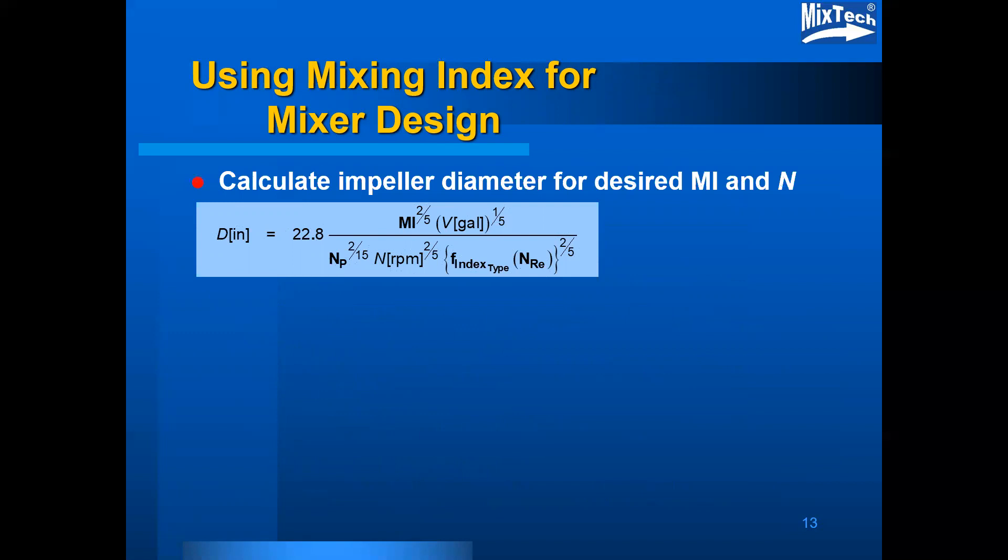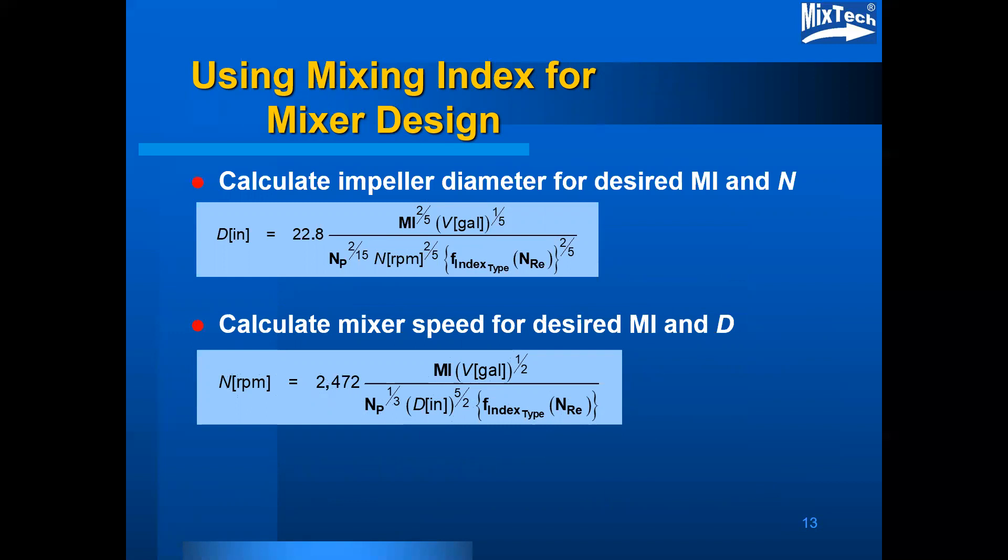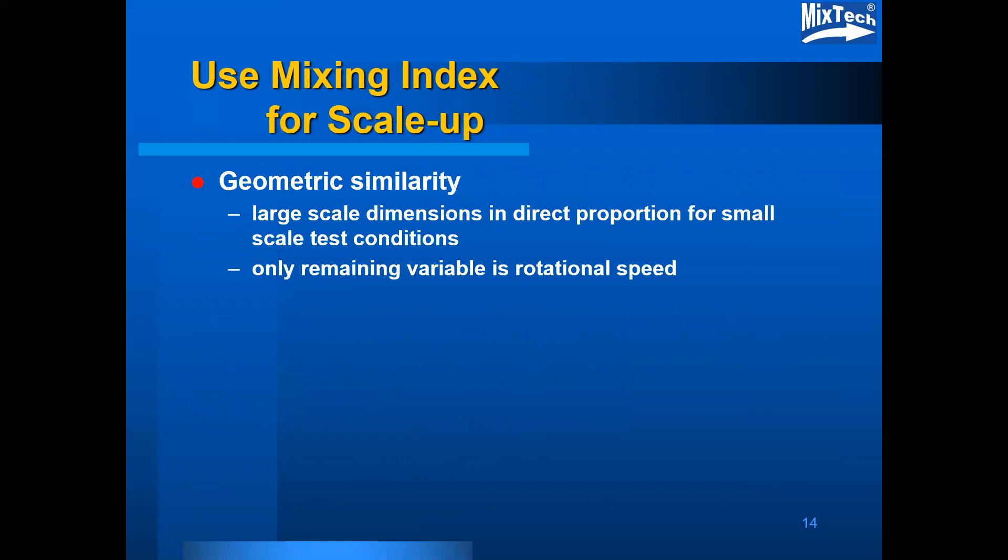The utility of the mixing index is expanded as it can also be used for mixer design rather than just evaluation. It is possible to use the rearranged form of the mixing index calculation to solve for an impeller diameter based on a rotational speed and a desired mixing index. The same thing can be done with mixer speed as a function of the desired mixing index and the impeller diameter.